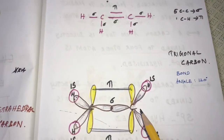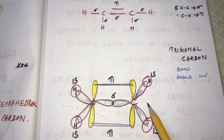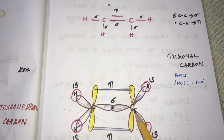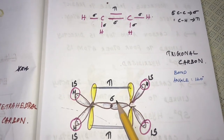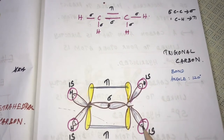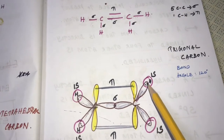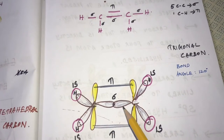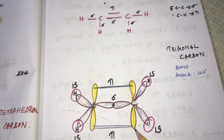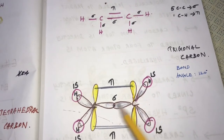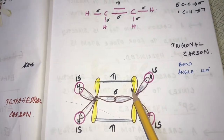As it is sp2 hybridized, the carbon atom is trigonal, making a bond angle of 120°. One sp2 hybridized carbon overlaps head-on with another sp2 hybridized carbon to form the sigma bond. The remaining two lobes on each carbon overlap with the 1s orbital of hydrogen forming C–H sigma bonds. The unhybridized pz orbitals on each carbon overlap sideways, forming the pi bond.